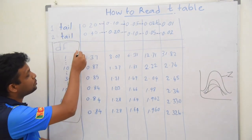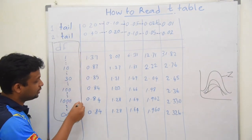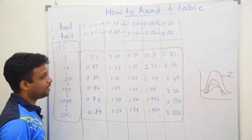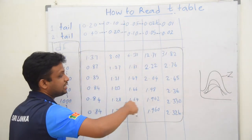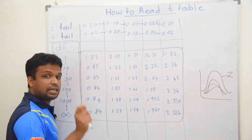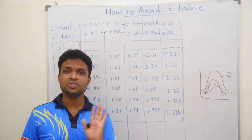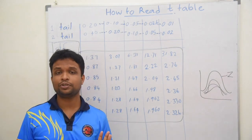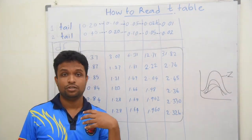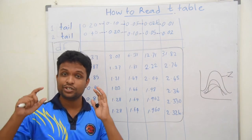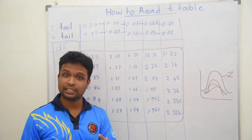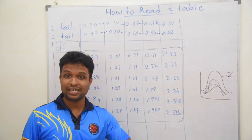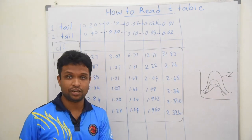The body of the T-table contains T-values. In your hypothesis testing, you apply the T-test, and once you apply it, you get something called a test statistic — that is the T-value. You then compare your T-value in this table.